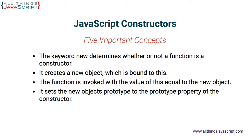Fourth, the constructor sets the new object's prototype to the prototype property of the constructor. A function has a prototype property, and that points to an object. When you use that function as a constructor, it assigns that object as the prototype to the new object that is created.